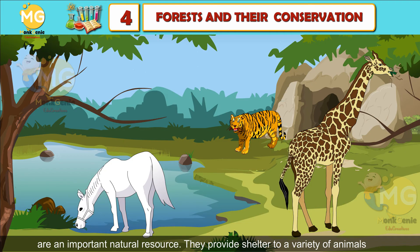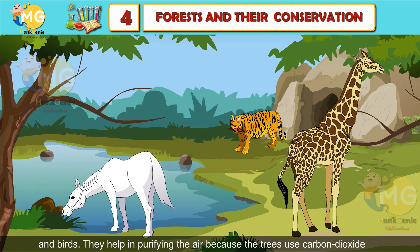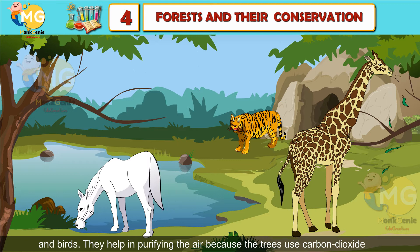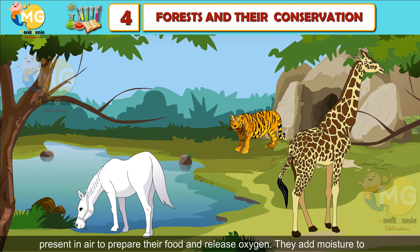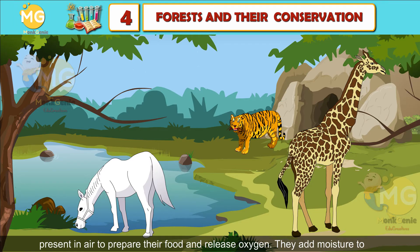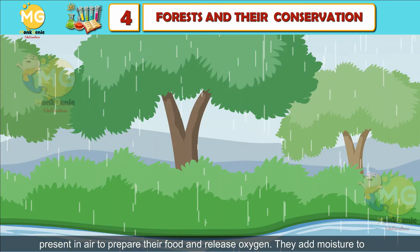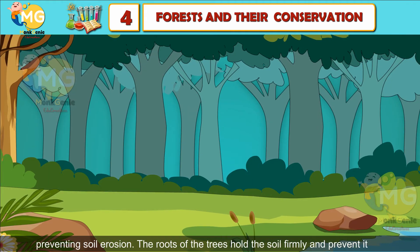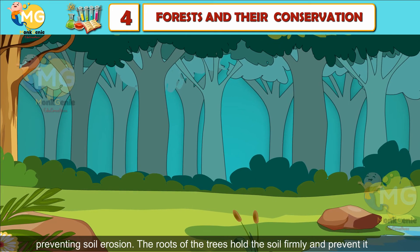Forests provide shelter to a variety of animals and birds. They help in purifying the air because trees use carbon dioxide present in the air to prepare food and release oxygen. They add moisture to the air and increase the amount of rainfall in that area. Forests also help in preventing soil erosion.